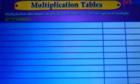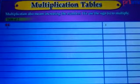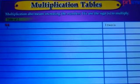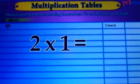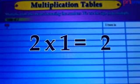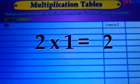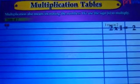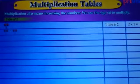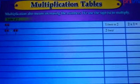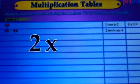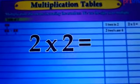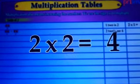Table of two. One two is two. Two into one equals to two. Two twos are four. Two into two equals to four.